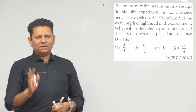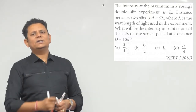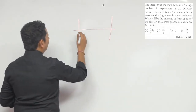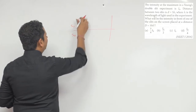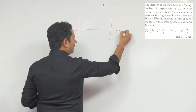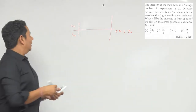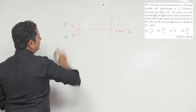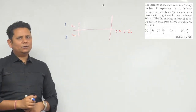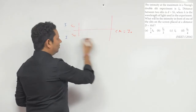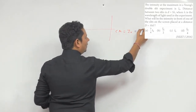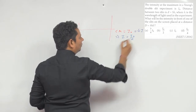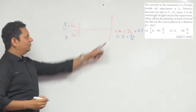This question is an example of a formula-based problem. This is a YDSE setup — here is slit S1, and here is the central maxima where the intensity is I0. The intensity at central maxima is I0. The answer to this question is I0/4.